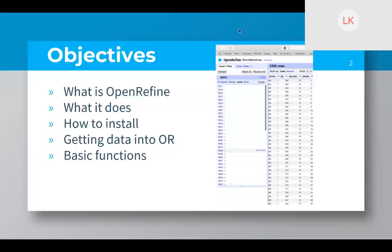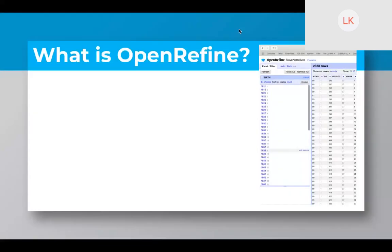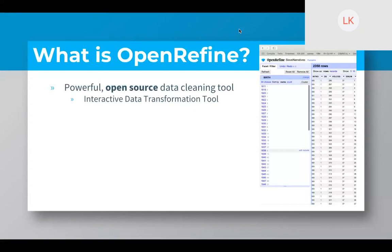Let's talk about our objectives for today: what is OpenRefine, what it does, how to install it, getting data into it, and some basic functions. OpenRefine is a powerful open source data cleaning tool — it helps you clean your data. If you have data from a survey, an Excel spreadsheet, web scraping, or any other kind of source, you can bring it into this tool to clean it. It's based on what we call an interactive data transformation tool, which means you can interact with the data set through a visual interface rather than having to use a programming language or statistical software. It is built for cleaning and exploring data, and that's really what it does best.